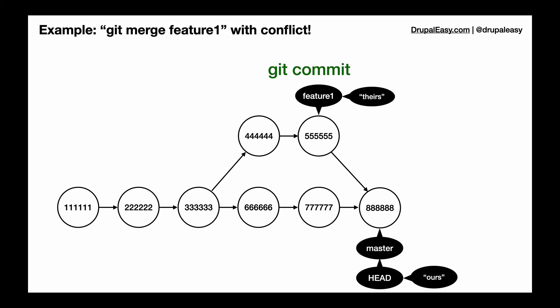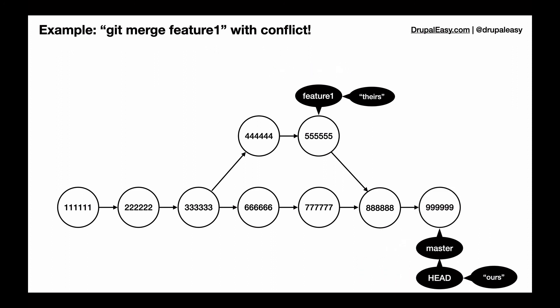And normally, if you do this, you're going to be sent into VI to finish up your message. But this will basically signal to git that we're ready to complete the merge. We issue the git commit command, and that will complete the commit, and then we can go about our business. And the 888 commit will now contain the updated composer.lock file.